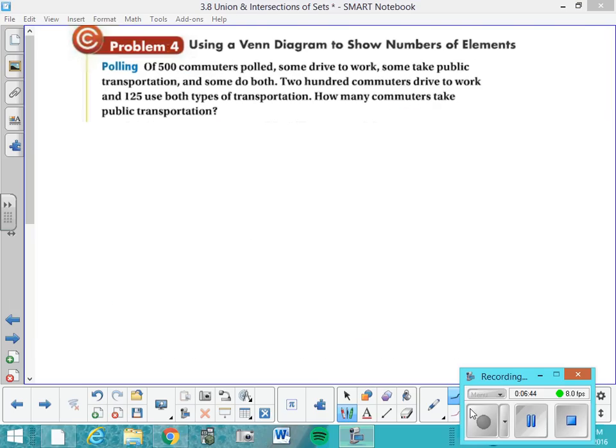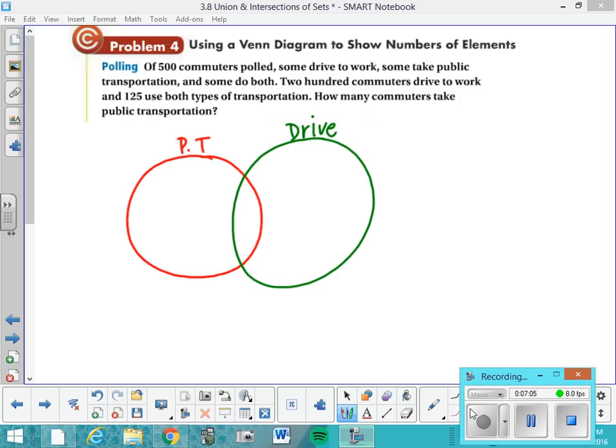But let's see how we can use Venn diagrams to help us solve problems. I'll give you a second to read this question. A 500 commuters polled, some drive to work and some take public transportation and some do both. So I think it's easier to untangle this problem if we're talking about public transportation and driving, and some do both. And we know that 500 people were polled. So it tells you explicitly, so if we set up this Venn diagram and put things where they belong, it tells you that 200 commuters drive to work. So I know that 200 things have to go in the green one. And I know that it's 500 altogether.